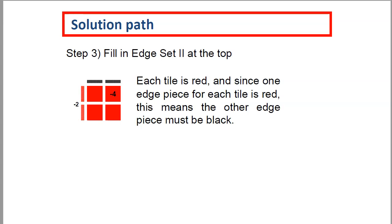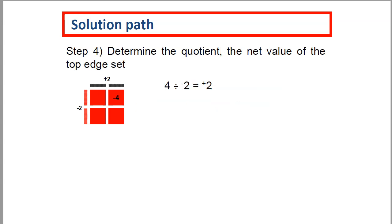Now we fill in edge set 2 at the top. Each tile is red, and since one edge piece for each tile is red — edge set 1 at the left — this means the other edge piece must be black.